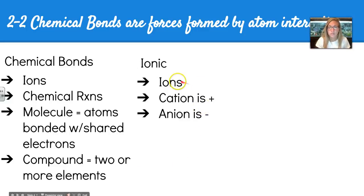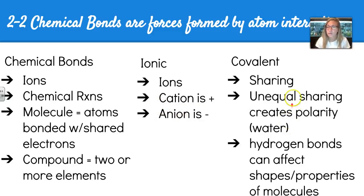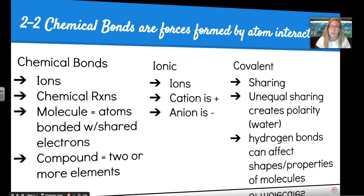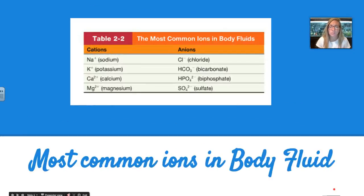Ionic bonds form ions that can be positive or negative, creating cations and anions. Covalent bonds involve shared electrons, and unequal sharing creates polarity — which is most important because that's how water gets its special properties, vital to the human body. Hydrogen bonds can also affect the shapes and properties of molecules, which are also very important to the human body.